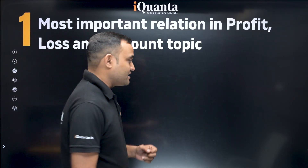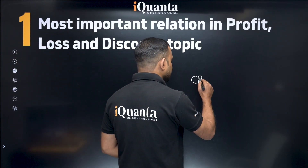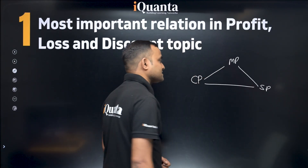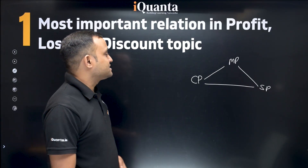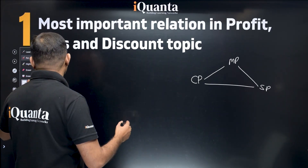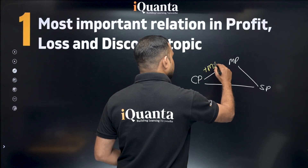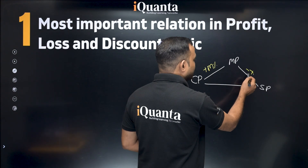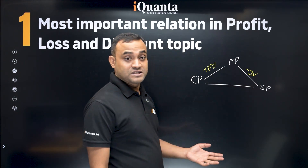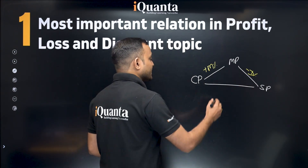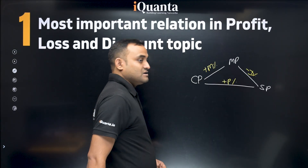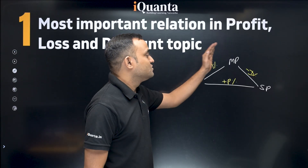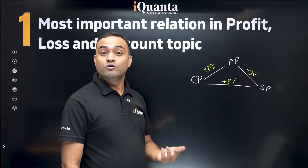One thing that you need to understand is that if you are aware of this triangle, which is related to cost price, mark price, and selling price — from cost price, how do we achieve mark price? Whenever we are using the markup percentage. From mark price, how do we achieve selling price? Whenever we are applying any kind of discount percentage. From cost price to selling price, we get the profit percent. So the profit percent is nothing but the successive combination of markup percentage and discount percentage.